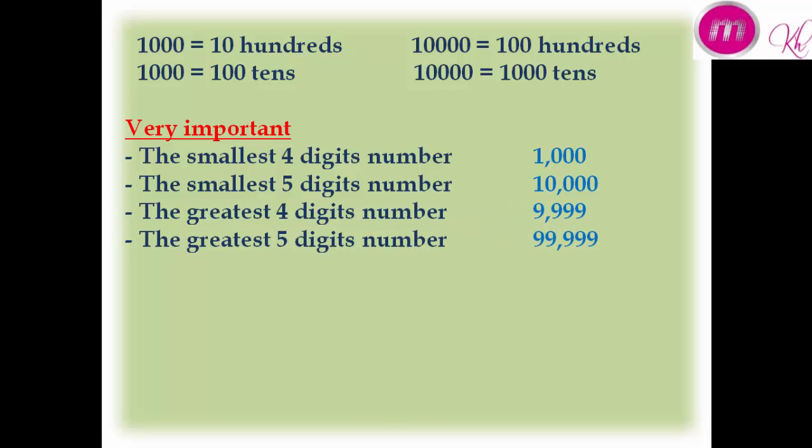The greatest four digit number is 9,999. The greatest five digit number is 99,999.